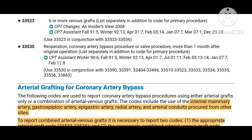There is one more code in this section: 33530, used for re-operation of a coronary artery bypass procedure or valve procedure more than one month after the original operation. If the patient had a previous CABG or valve procedure and returns for re-surgery after one month, report 33530 as an add-on code paired with the applicable codes including 33510-33523, 33533-33536, and others listed.